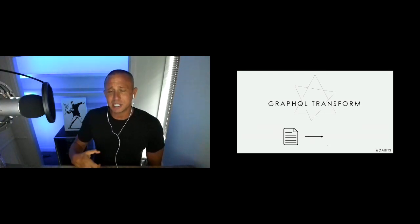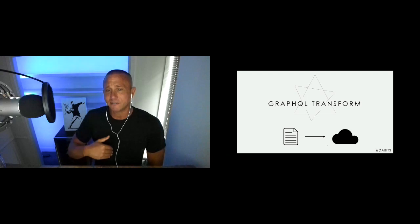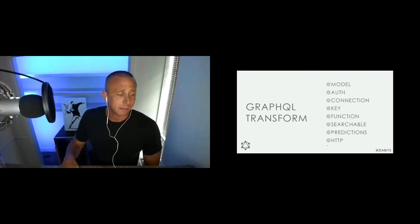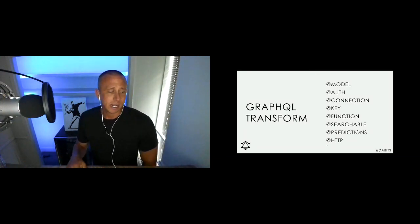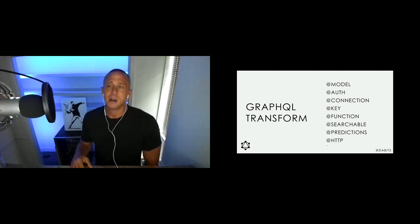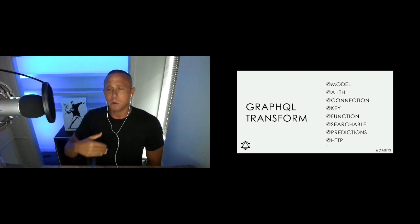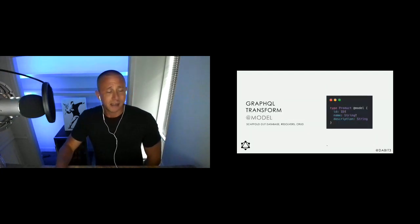That's where the GraphQL Transform library comes in. You take your GraphQL schema — for example, a 'Todo' type for a to-do app — add these directives, and run a build process either locally for testing or during deployment. The result is infrastructure based on that schema. The transforms we'll cover today are @model, @auth, @connection, and @function.